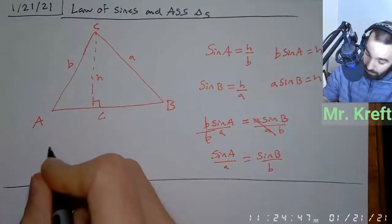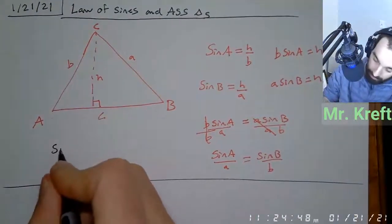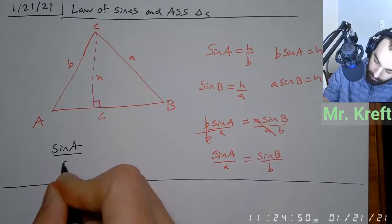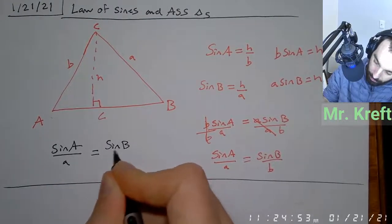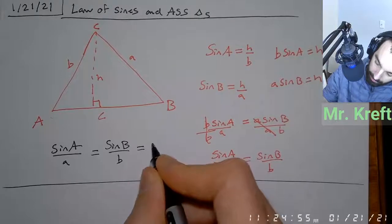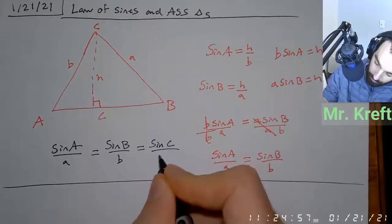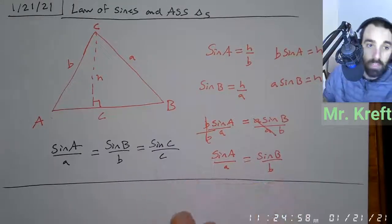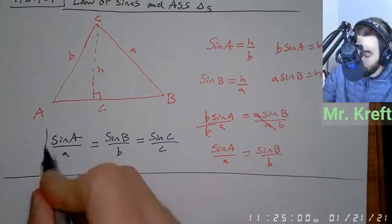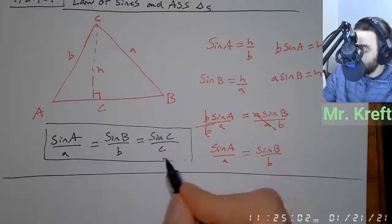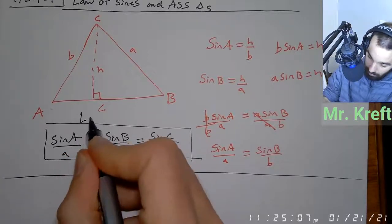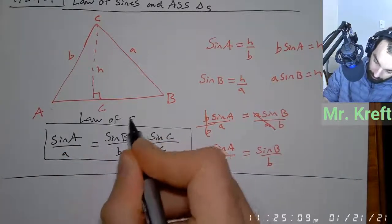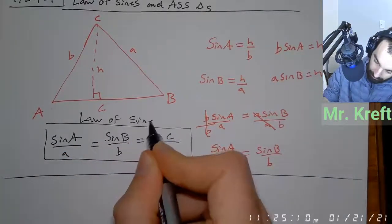The law of sines is: sine of angle A over side A equals sine of angle B over side B, and sine of angle C over side C. You can flip this — it doesn't matter if the side is on top or if the angle is on top. All that matters is that you're consistent. We call this the law of sines.